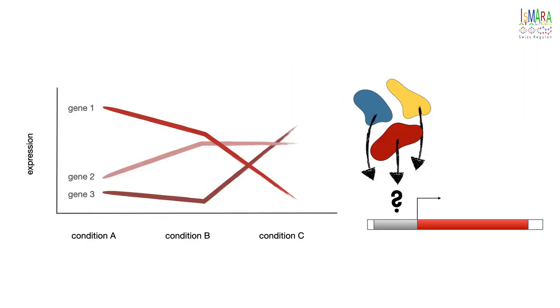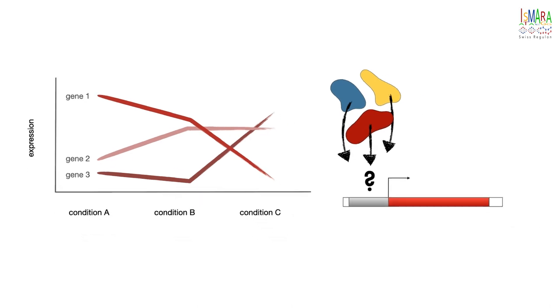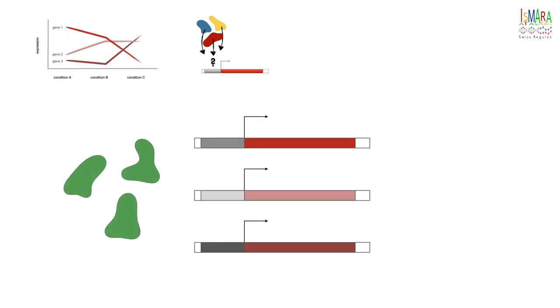Before I dive into the results, I would like to briefly outline what ISMARA does. ISMARA's main aim is to identify the gene regulatory interactions that are underlying the observed gene expression changes in the input data. That is, ISMARA predicts the key transcription factors, how these transcription factors are changing their activities across the samples, which genes these transcription factors are targeting and more.